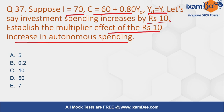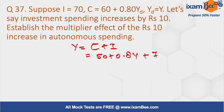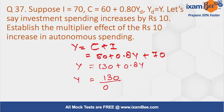First, output equals consumption plus investment: 60 plus 0.8Y plus 70, giving 130 plus 0.8Y. Solving, Y equals 130 divided by 0.2, so the initial equilibrium output is 650.